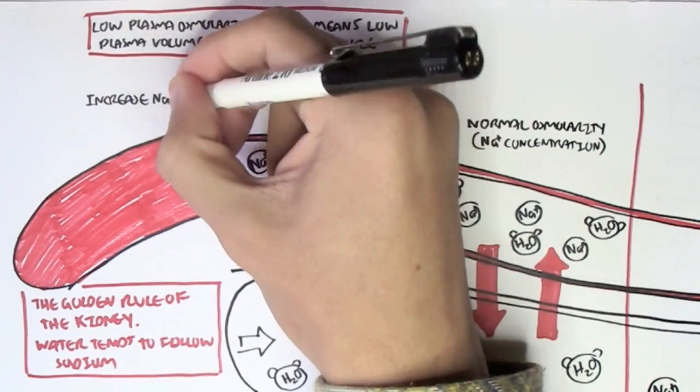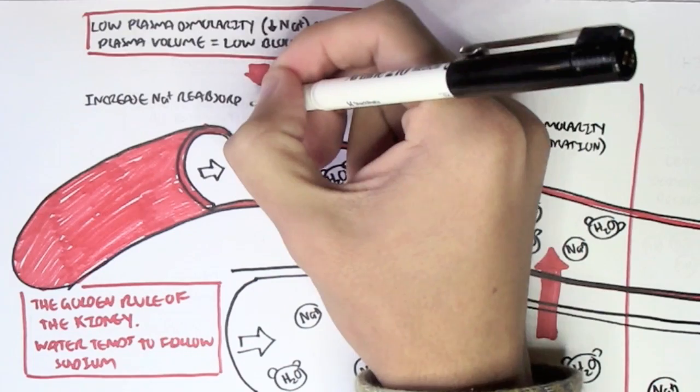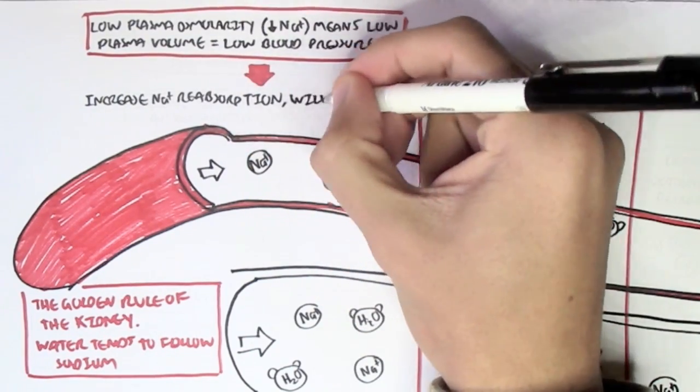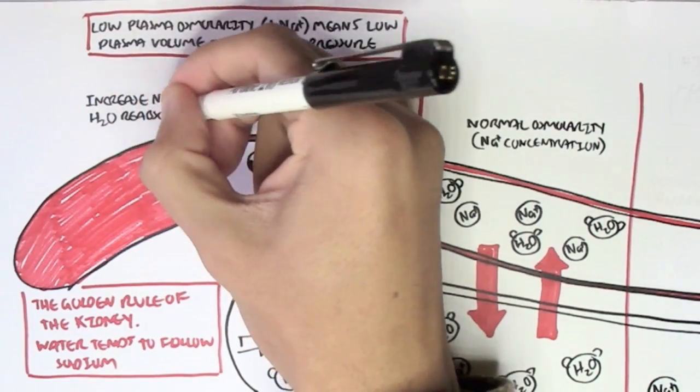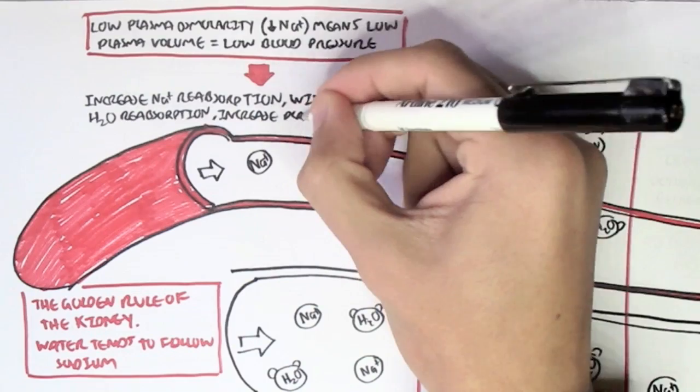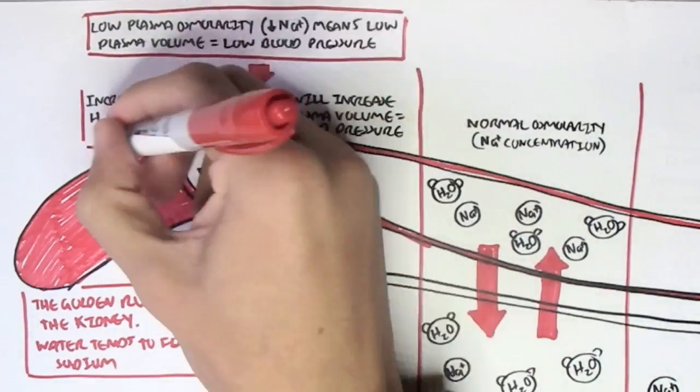Therefore, we would increase sodium reabsorption from the tubule, which also causes an increase in water reabsorption from the tubule. This increases the plasma volume, which increases blood pressure.